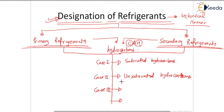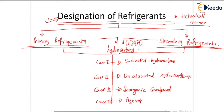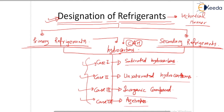The third case covers inorganic compounds, and the fourth case is when your refrigerant is an azeotrope. In the next session, we will study in detail these four cases — that means we will write the designation of saturated, unsaturated, inorganic, and azeotropic refrigerants in a technical manner.